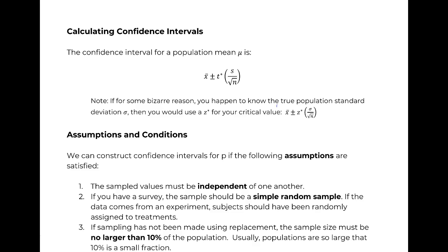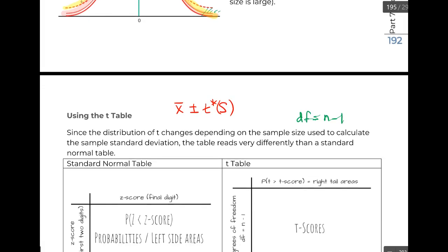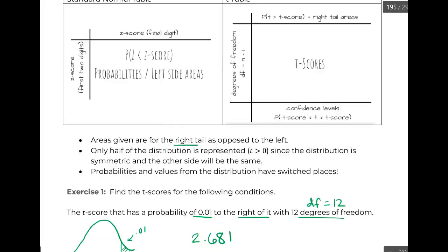Alright, so you can see one thing I wrote on the previous page. This was the standard error of our x-bar, which is the s divided by the square root of n. So here's our actual formula.